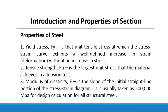Properties of steel. First, yield stress, denoted as F sub Y, is the unit tensile stress at which the stress-strain curve exhibits a well-defined increase in strain or deformation without any increase in stress. Number two, tensile strength, or F sub U, is the largest unit stress that the material achieves in a tension test.